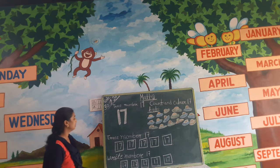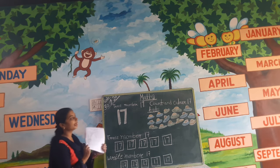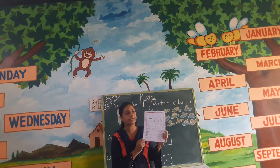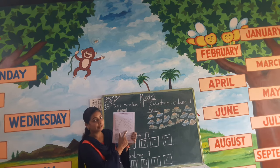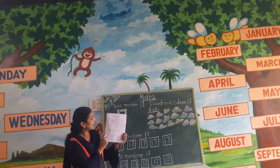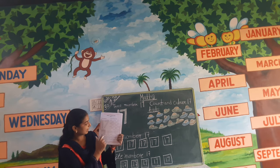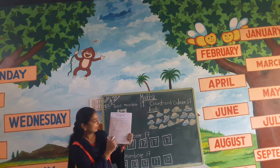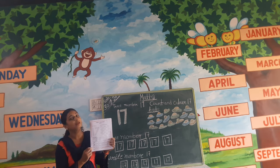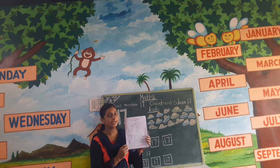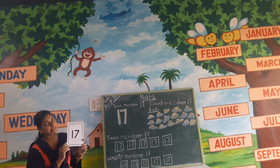Children, keep number 17. Open your book, page number 29. Look at here — press number 17, then count. Below, write number 17. Write number 17 in your book — this is your homework.